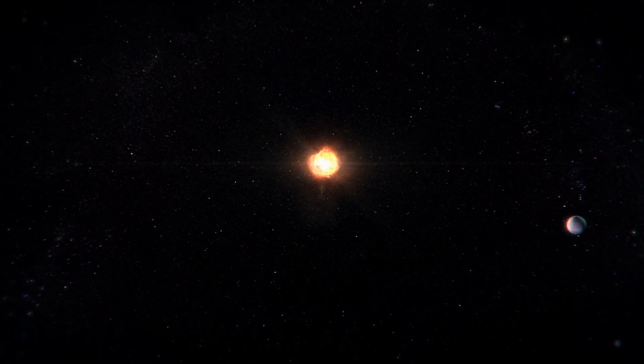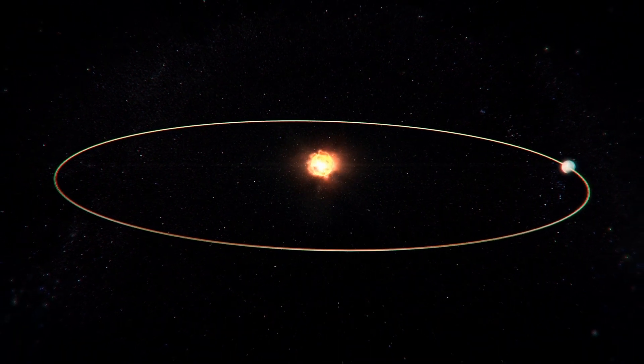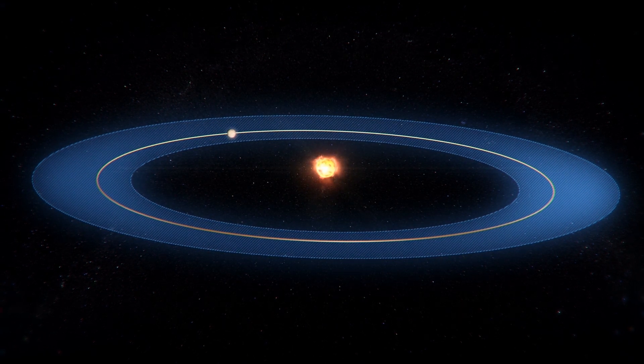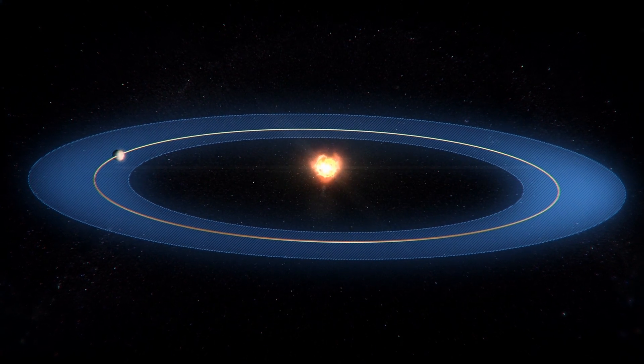Kepler-1649c orbits the red dwarf so closely that a year on Kepler-1649c lasts only 19.5 Earth days, but it lies within the star's Goldilocks zone, where temperatures are neither too hot nor too cold for liquid water to exist on the planet.